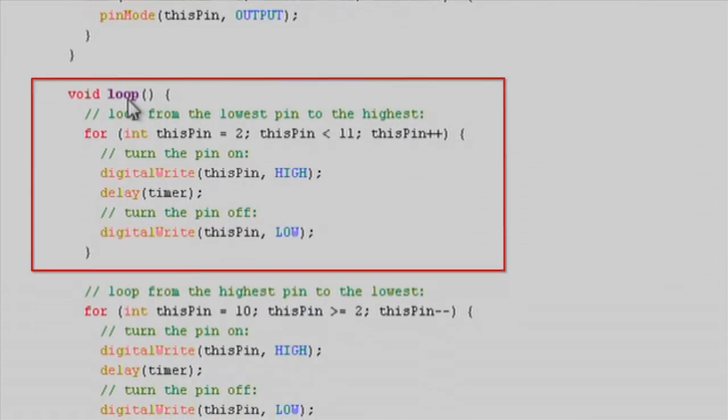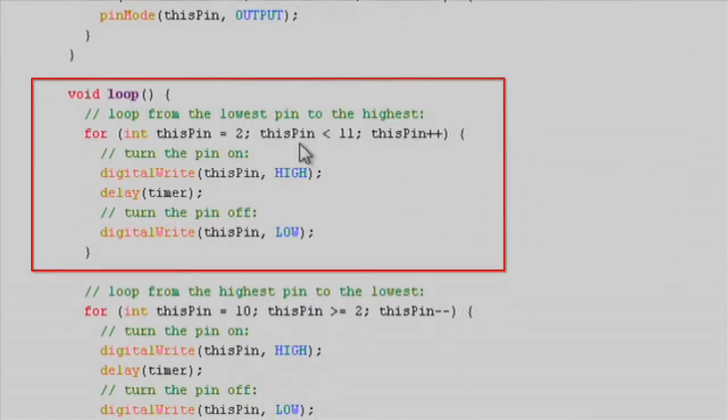Now let's see what happens in the loop portion of the code. In the first for loop, we turn the LEDs on and off starting from pin 2 and ending at pin 10 using the digitalWrite function. The delay function is used for timing the on and off periods.